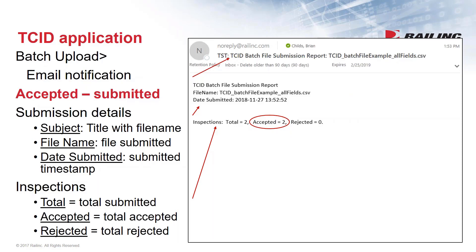After uploading, the logged-in user receives an email submission notification. I'll go over three different email scenarios. All emails start with 'TKID' followed by what you're looking at. The first scenario - a submission that was accepted - shows a 'Batch File Submission Report' subject. The email includes the file name with extension at the top, which is additional functionality we added at Railing so users can see which file passed or failed. The report body repeats the file name, date and time stamp, and a high-level view showing how many inspections were submitted and accepted.